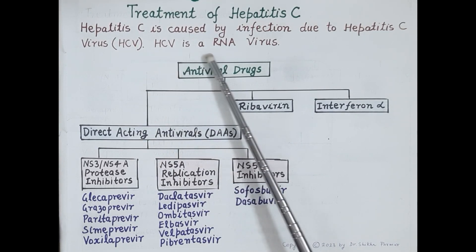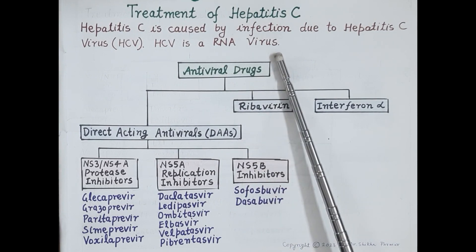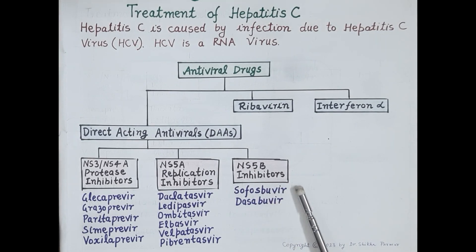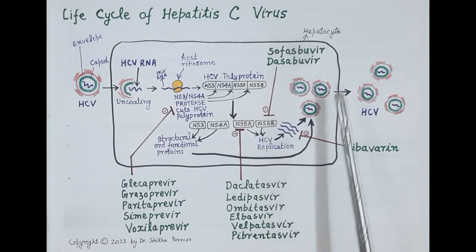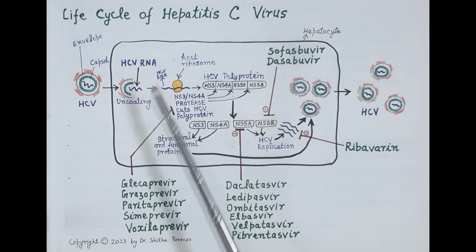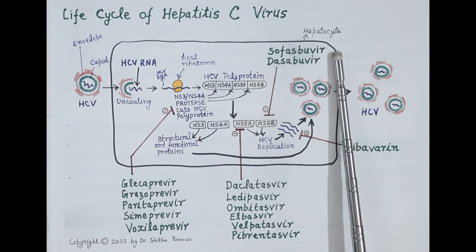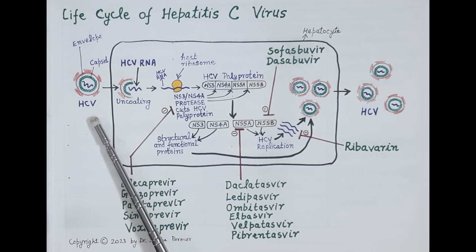Hepatitis C virus is an RNA virus. In order to study pharmacology of all the drugs used for the treatment of hepatitis C, it is essential to understand the life cycle of hepatitis C virus. Now look at this figure. This cell is a liver cell called a hepatocyte. This is hepatitis C virus, HCV, an RNA virus.